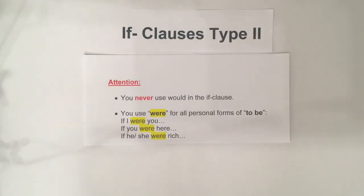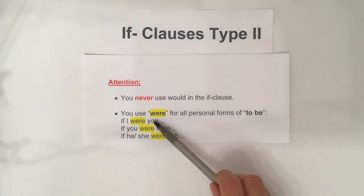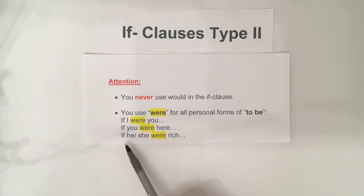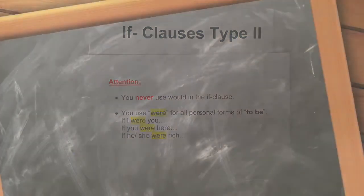There are two things you really have to remember. First, you never use 'would' in an if-clause. Second, you use 'were' for all personal forms of 'to be' — for example: 'If I were you', 'If you were here', or 'If he or she were rich.' Usually you would use 'was', but for if-clause type 2 you always use 'were'.